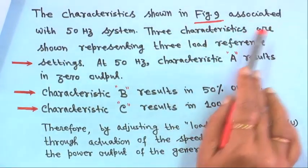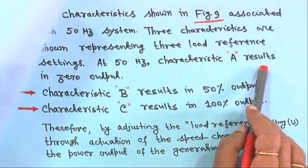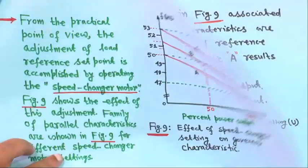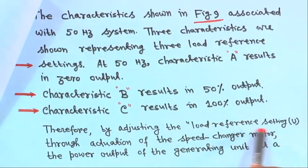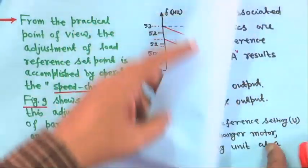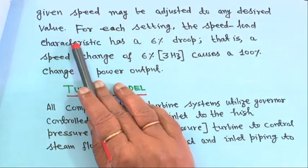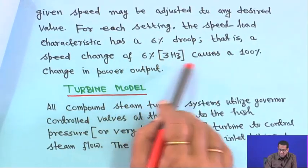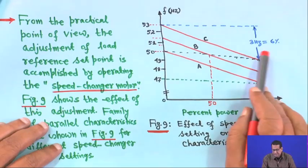The characteristics shown in figure 9 are associated with a 50 hertz system. Three characteristics represent 3 load reference settings: at 50 hertz, characteristic A results in 0 output, characteristic B results in 50 percent output, and characteristic C results in 100 percent output. By adjusting the load reference set point U through actuation of the speed changer motor, the power output of a generating unit can be adjusted to any desired value at a given speed. Each setting has a 6 percent droop — a speed change of 6 percent, or 3 hertz, causes a 100 percent change in power output.